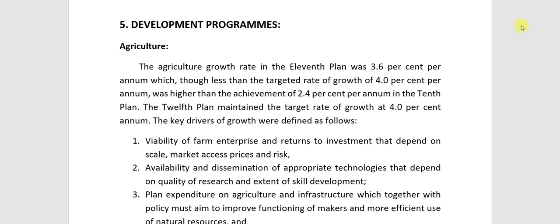The 12th plan maintained the target growth rate of 4 percent per annum. Now, what were the reasons for the agricultural growth that we achieved? The key drivers of growth were defined as follows.